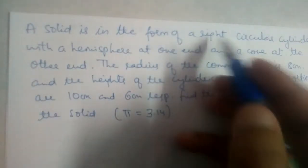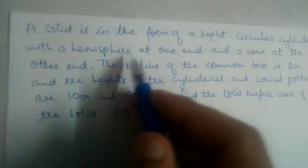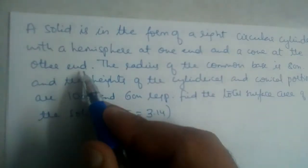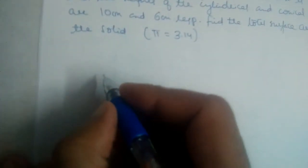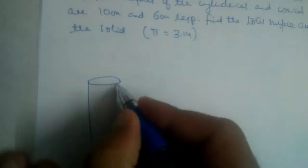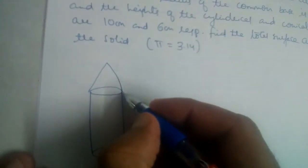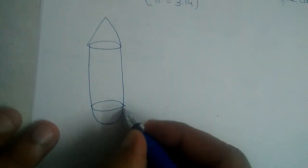A solid is in the form of a right circular cylinder with a hemisphere at one end and a cone at the other end. Let us draw the diagram. We have a cylinder and cone at one end and hemisphere at the other end.